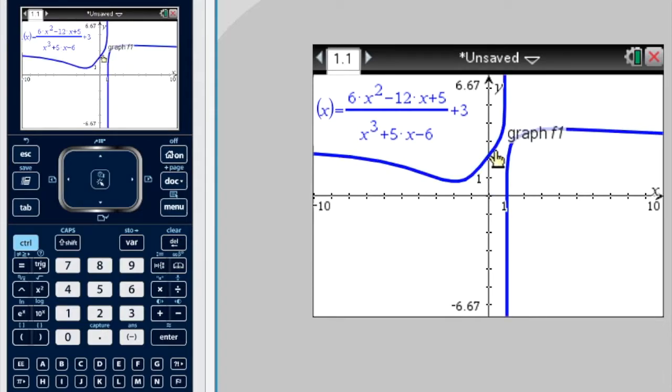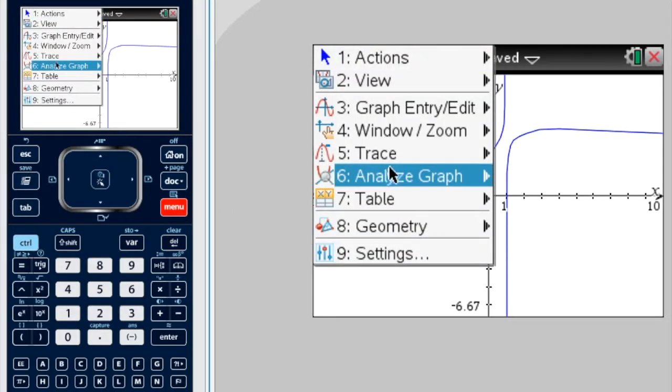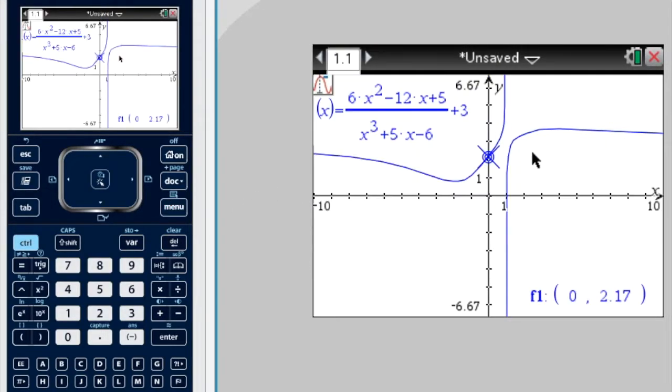We can find the y-intercept here. We can find the x-intercept here, which is at 1. And the y-intercept, we could just use the trace function. So if I go menu, trace, graph, trace, it actually started at the y-intercept, so 0, 2.17. So the y-intercept is y equals 2.17.